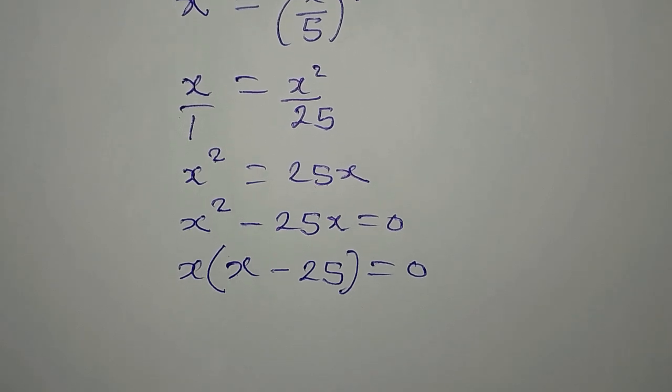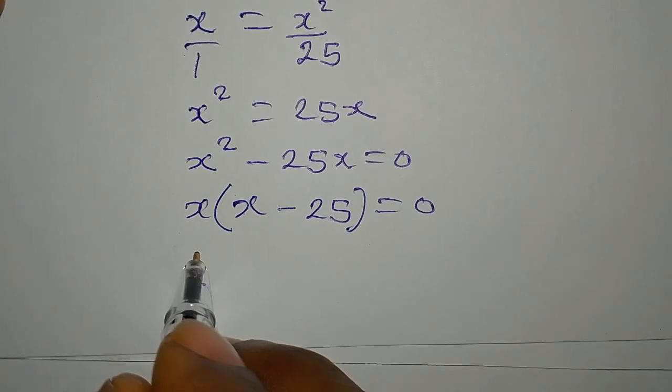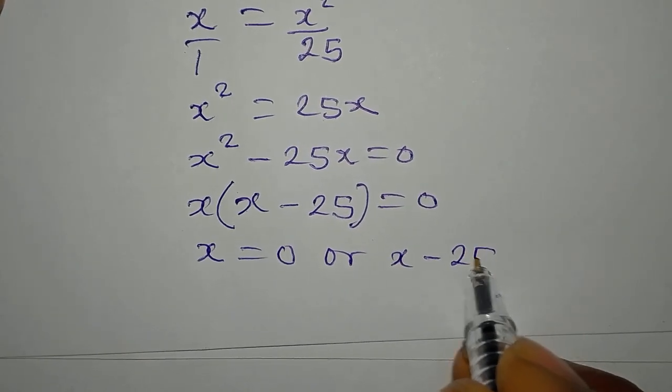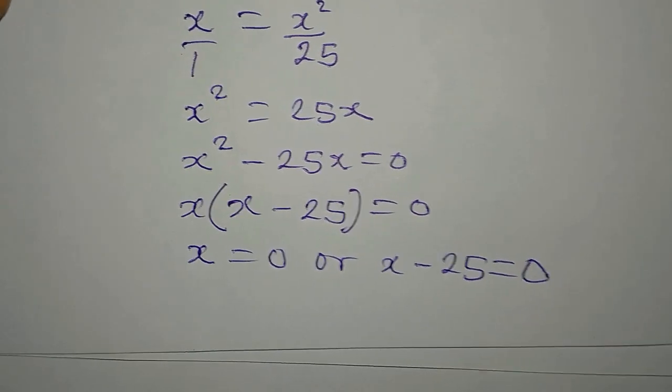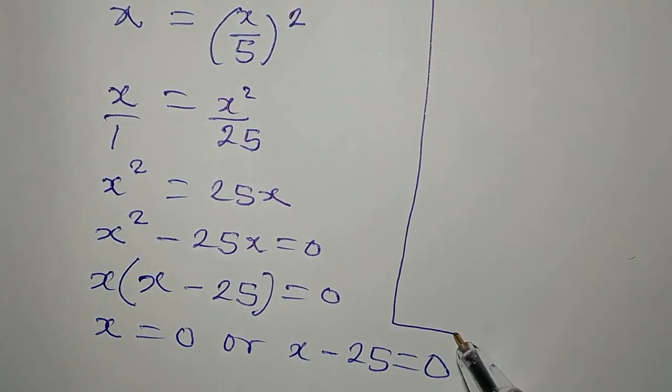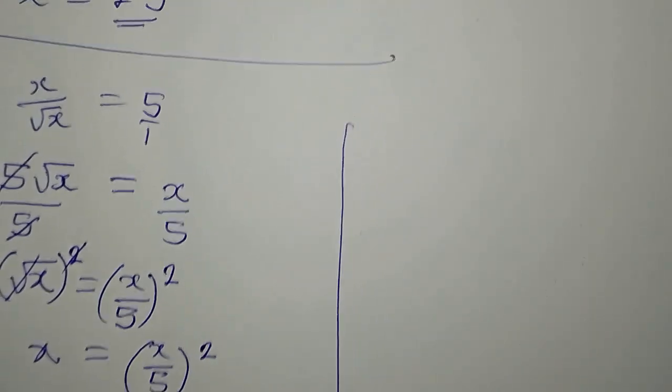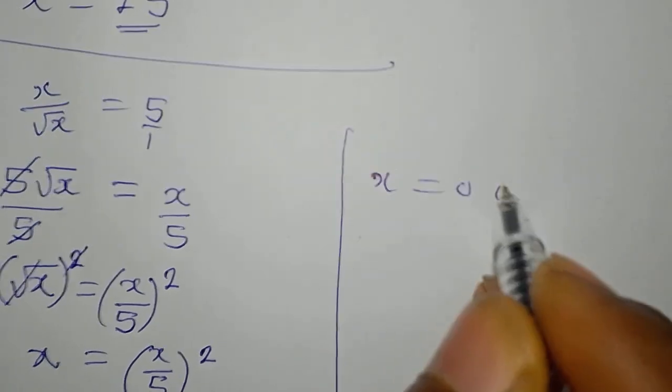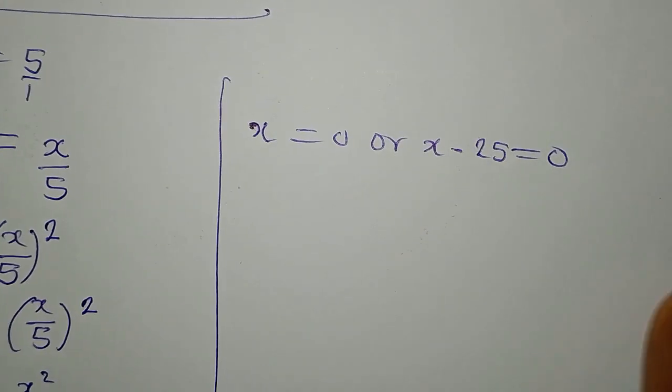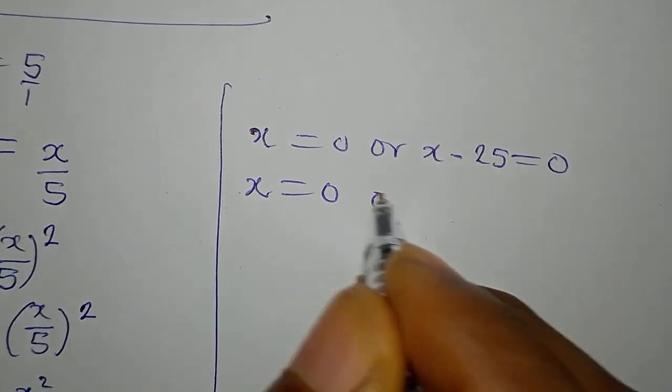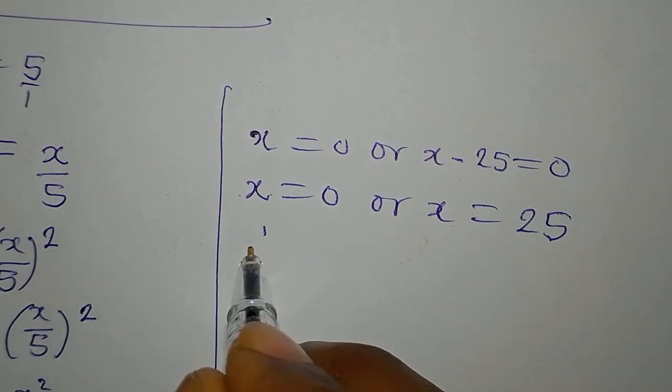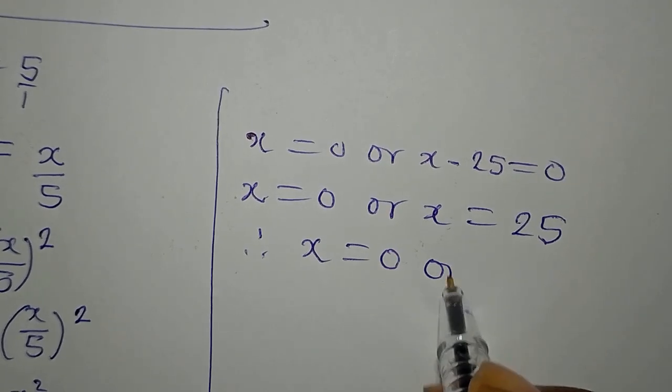At this point, we apply zero product property. So it is either x equals 0 or x minus 25 equals 0. So, like we did before, we got x equals 0 or x minus 25 equals 0. And x remains 0 or x is 0 plus 25 and that is 25. Therefore, x equals 0 or 25.